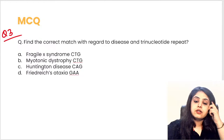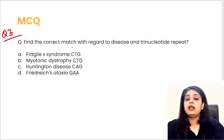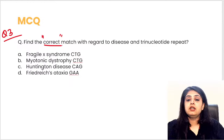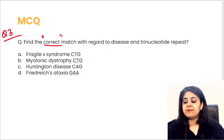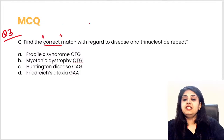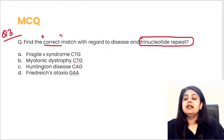Question three is not image-based — a student requested it. You need to identify the correct match between diseases and their trinucleotide repeats; there may be multiple correct options. The answers coming in suggest B, C, and D are correct.